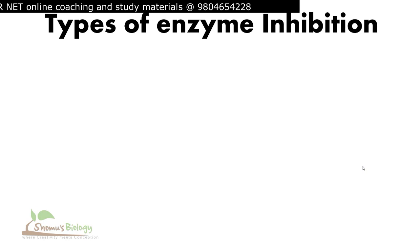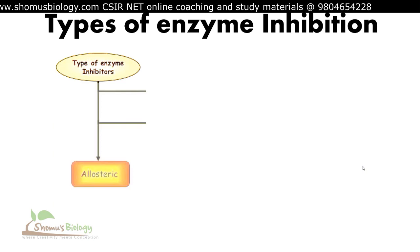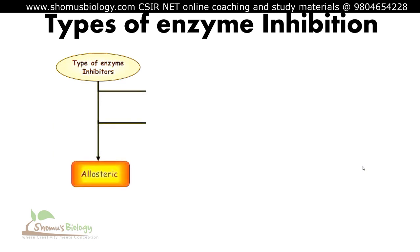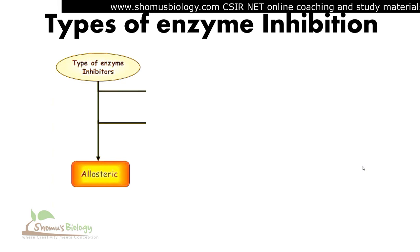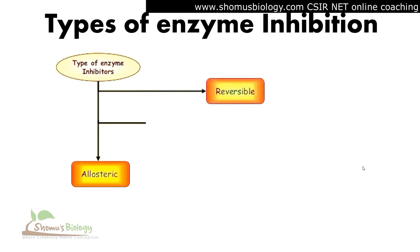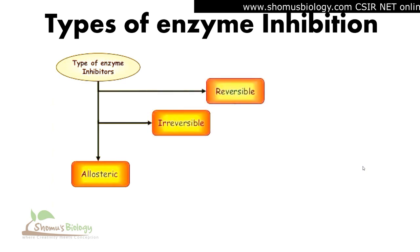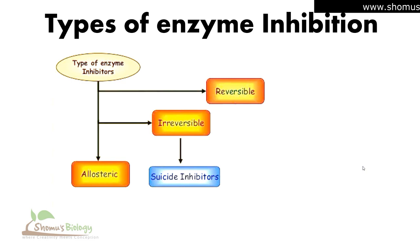Enzyme inhibitors can be classified into three different classes. First is allosteric regulation, where a regulator molecule binds to a different site on the enzyme — the allosteric site — rather than the active site, inhibiting the enzyme's ability to convert substrate into product. Second is reversible inhibition. Third is irreversible inhibition, also known as suicide inhibition, where the enzyme is permanently modified so the active site can no longer convert substrate into product.